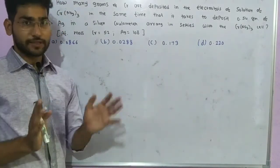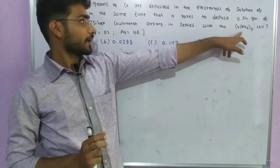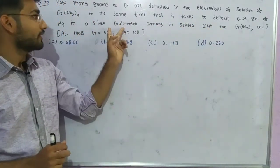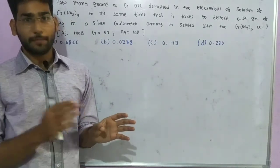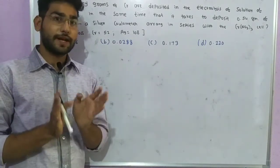You have two cells arranged in series: one is chromium nitrate, and the other is a silver coulometer. Now, when you have cells in series and the same current passes through them, you can apply Faraday's second law.